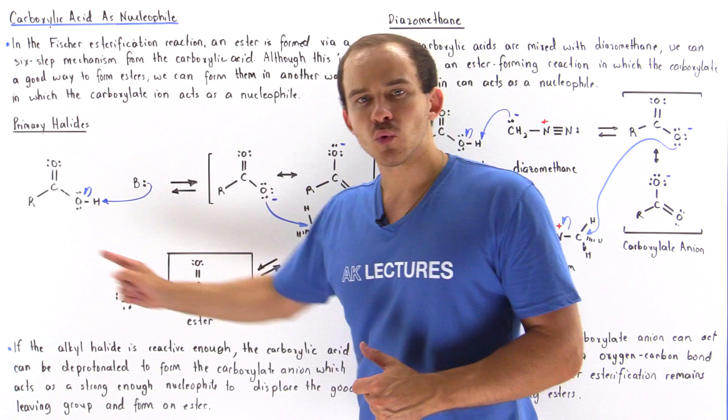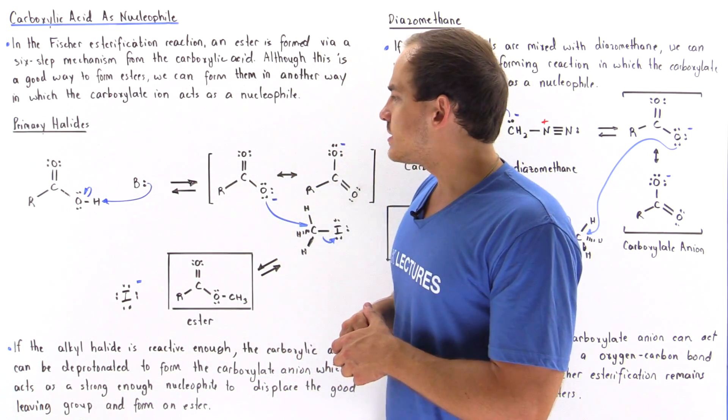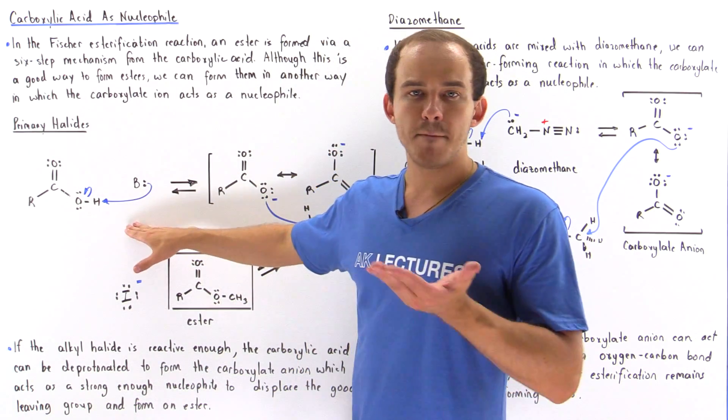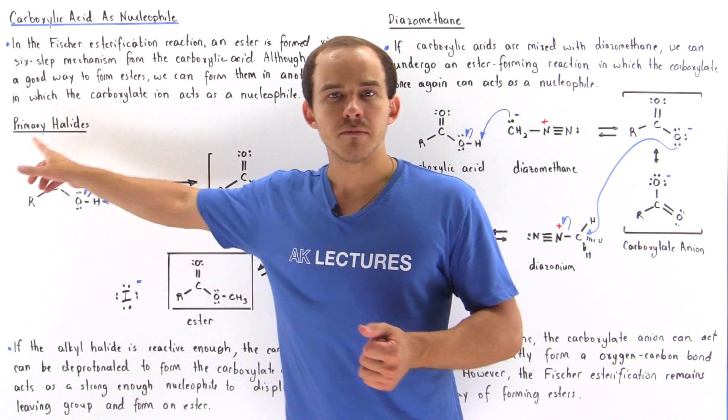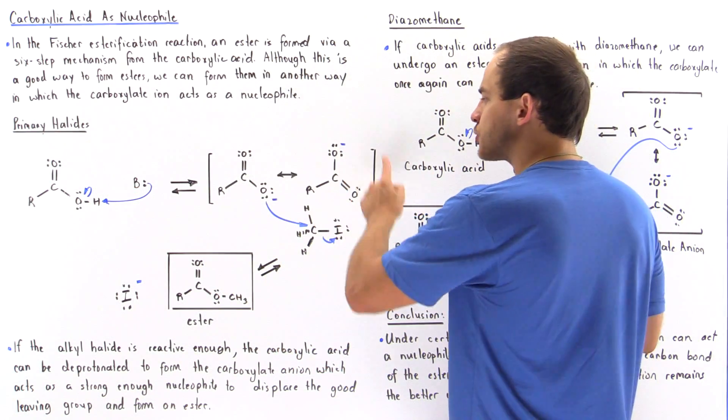So let's examine method number one that deals with primary halides. Let's suppose we take a carboxylic acid and mix it with some base. In the first step, the base deprotonates the H atom of this carboxylic acid, and we form our intermediate.